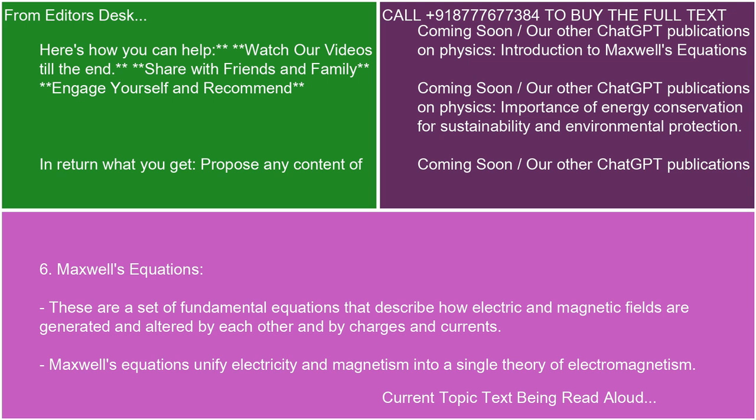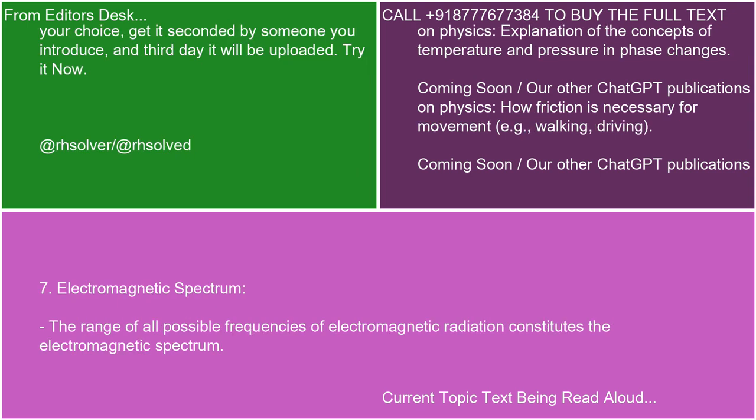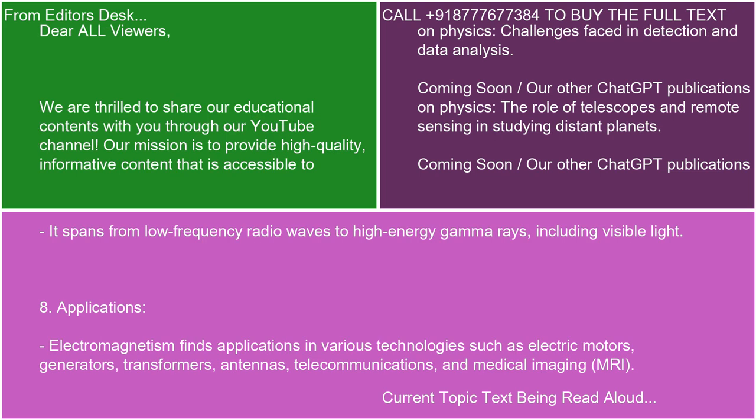7. Electromagnetic Spectrum. The range of all possible frequencies of electromagnetic radiation constitutes the electromagnetic spectrum. It spans from low-frequency radio waves to high-energy gamma rays, including visible light.